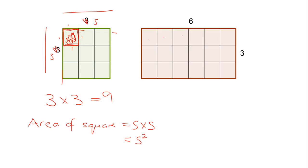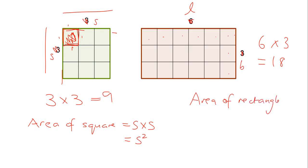What about this rectangle? How many of these little squares are there? There are six going along and three rows, so it's six times three which gives us eighteen. If we generalize that: if this is the length and this is the breadth, the area of a rectangle will be equal to length times breadth. These formulas are ones you should have worked with before — for a square it's side times side, and for a rectangle it's length times breadth. It's worth writing these down in your homework book now.